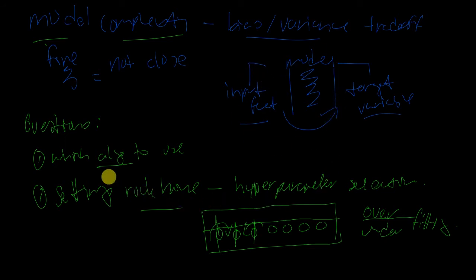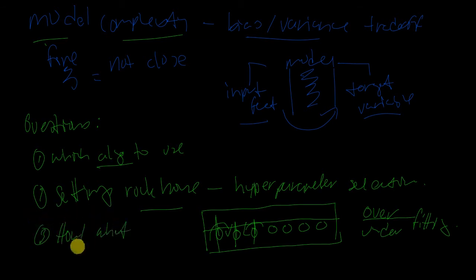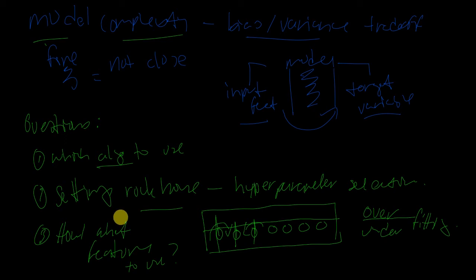So far we've covered: which algorithm to use, which settings to apply so we're not over- or underfitting, and even something as simple as what features to use. A lot of this comes down to an art — it's really subjective to the type of problem you're trying to solve — though it does have an objective nature to it as well.